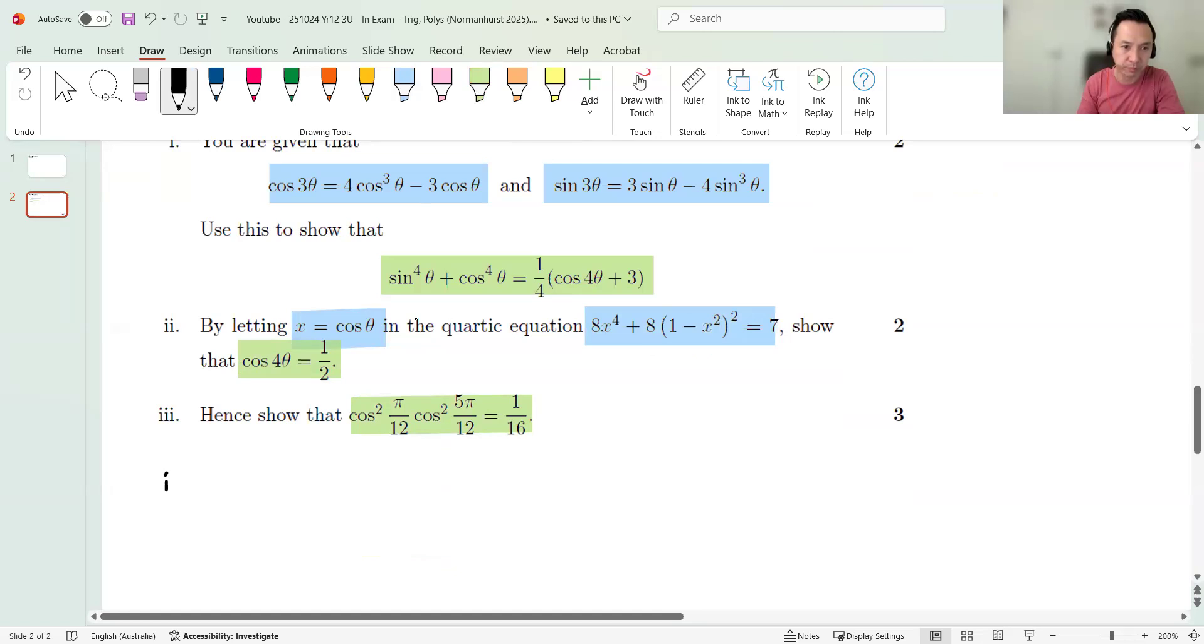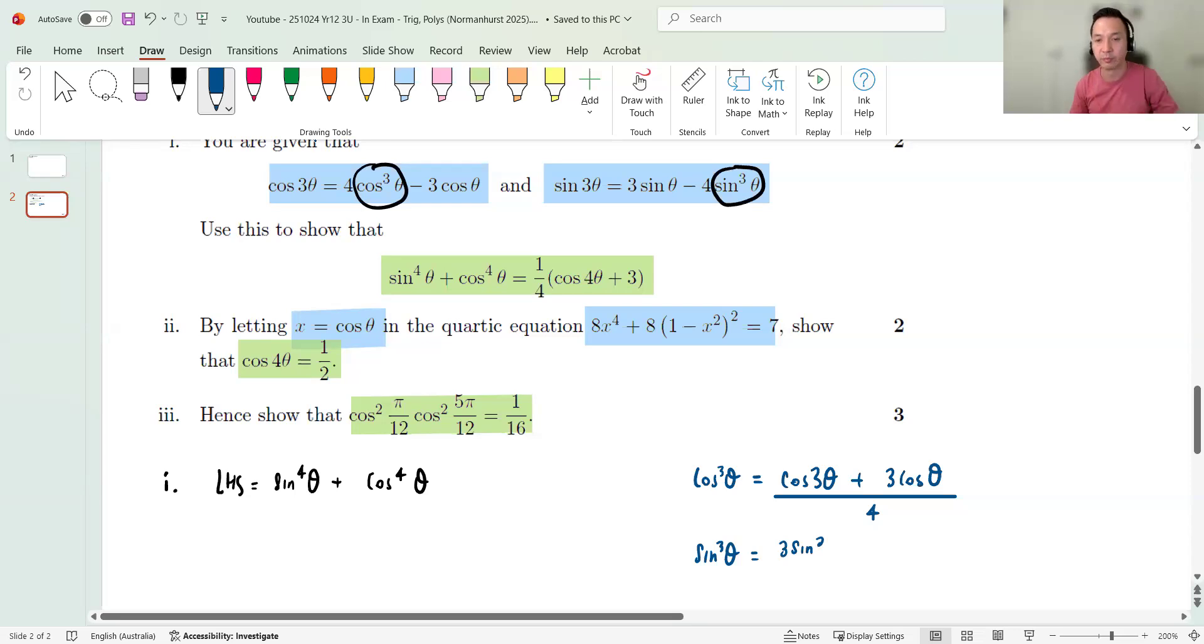So, part one. Left-hand side equals sine four plus cos four. Okay, now let me think. That's cos and sine. Let me make the subject first. Actually, let me off to the side here. Let me make cos cubed a subject. So that's like cos three theta plus three cos theta all over four. Okay, and sine cubed. So sine cubed's there, so it'll be like three sine theta minus sine triple all over four. Okay, so what I'm going to do, maybe I'll multiply both sides by sine and cos to get to four. I'm just going to sub these guys.